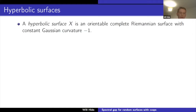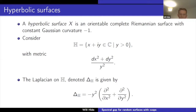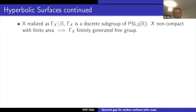First I want to introduce the setting: hyperbolic surfaces. A hyperbolic surface X is an orientable complete Riemannian surface with constant Gaussian curvature of minus one. We can model these surfaces on the upper half plane — the set of complex numbers with strictly positive imaginary part equipped with the usual metric. The group of isometries of the upper half plane is PSL(2,R), and any hyperbolic surface is the quotient of the upper half plane by a discrete subgroup of PSL(2,R). If X is a non-compact finite area surface, then this is a finitely generated free group.